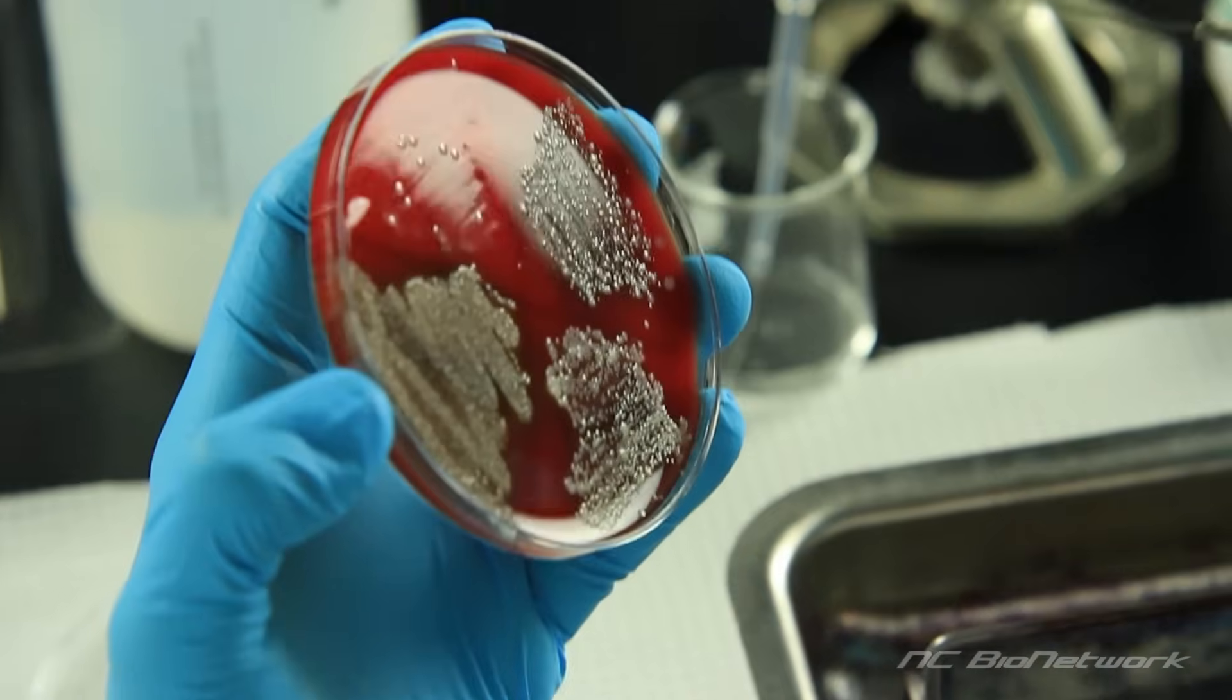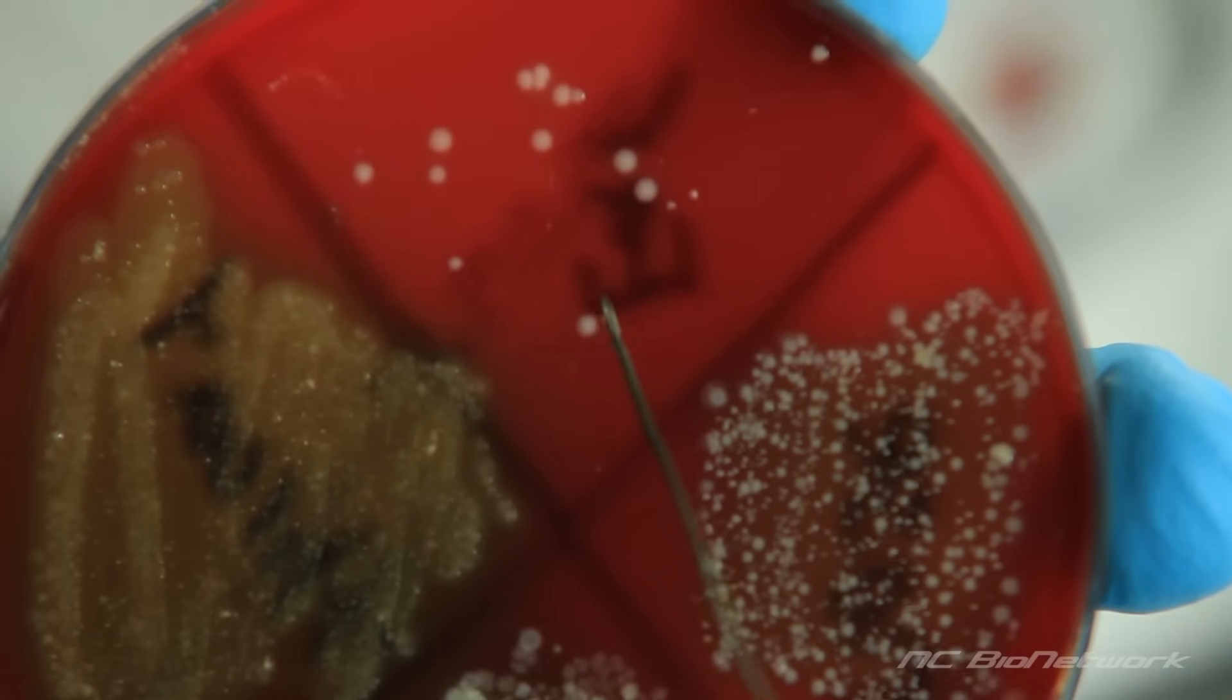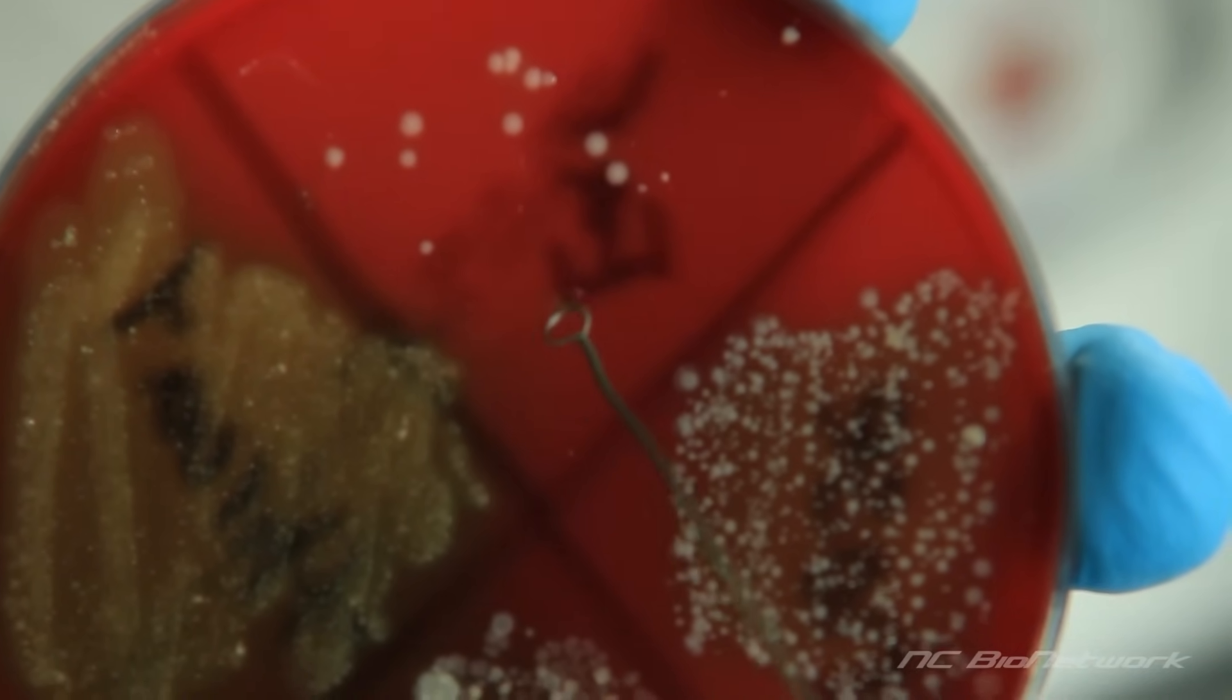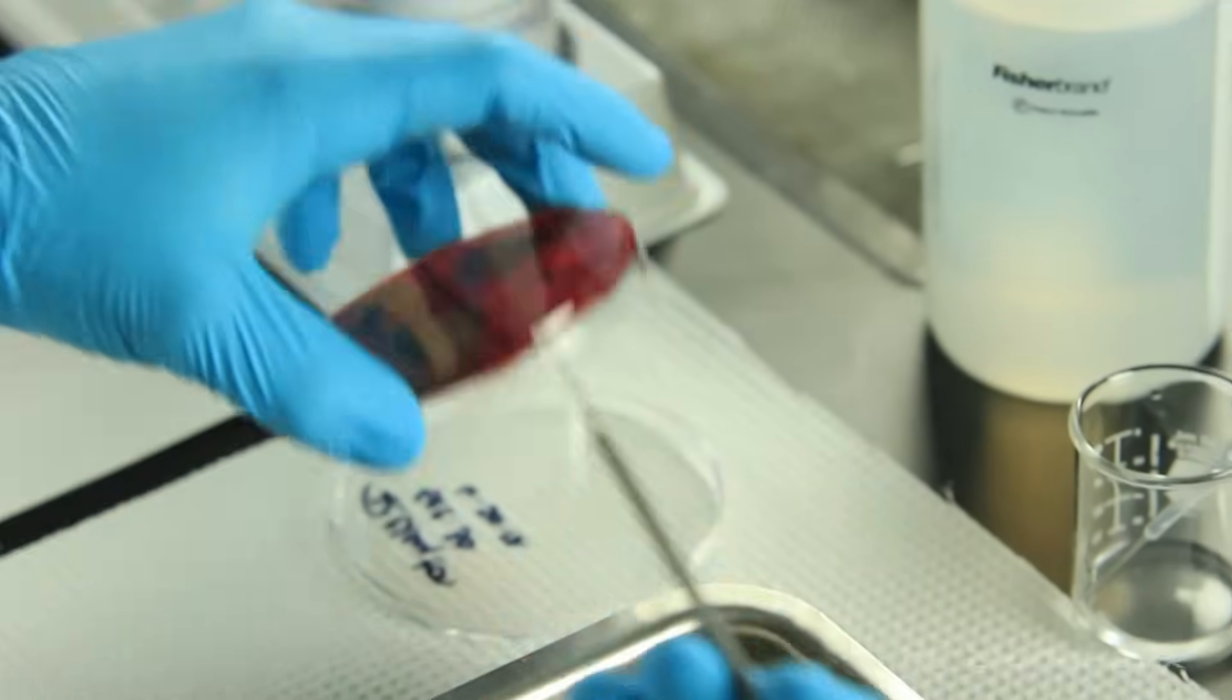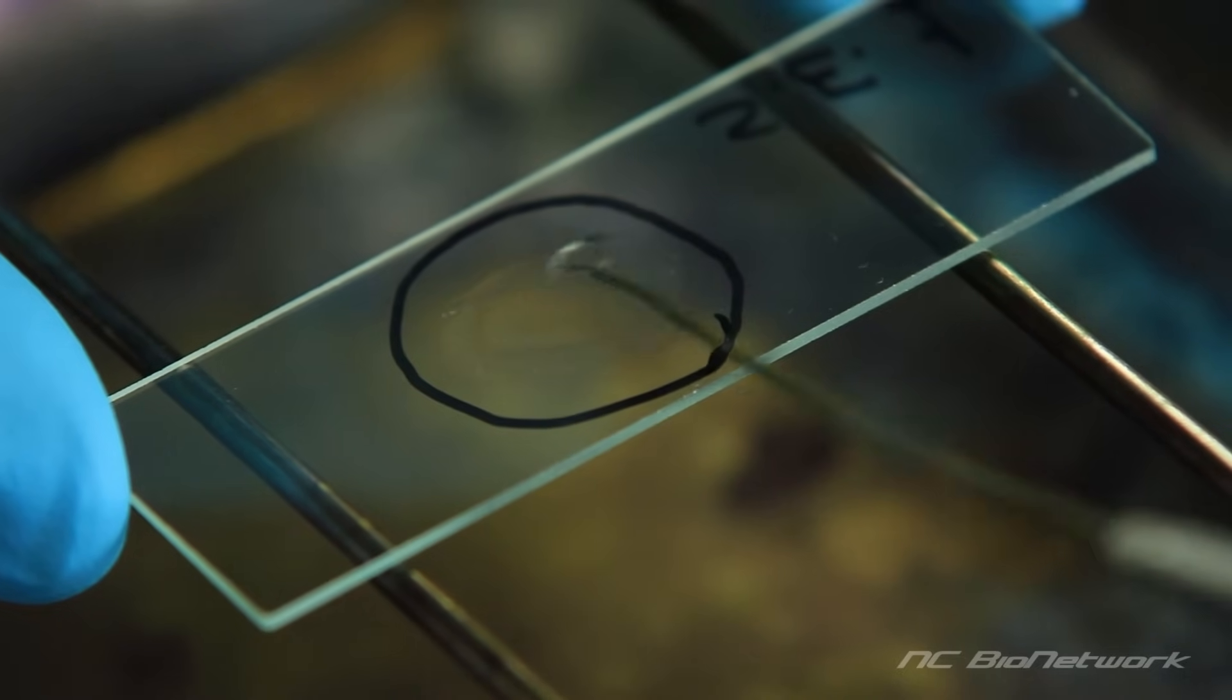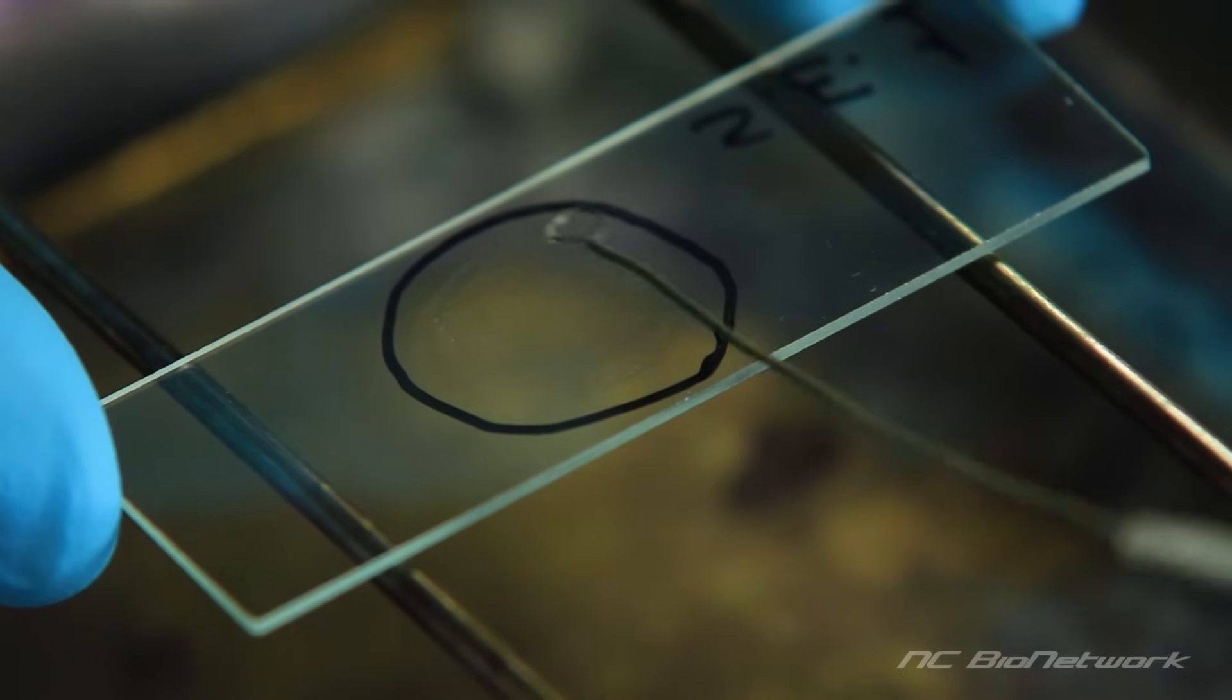touch the bacterial colony and transfer the bacteria to the slide. Use the loop to mix the cells and the water. Spread the mixture to completely fill the circle.